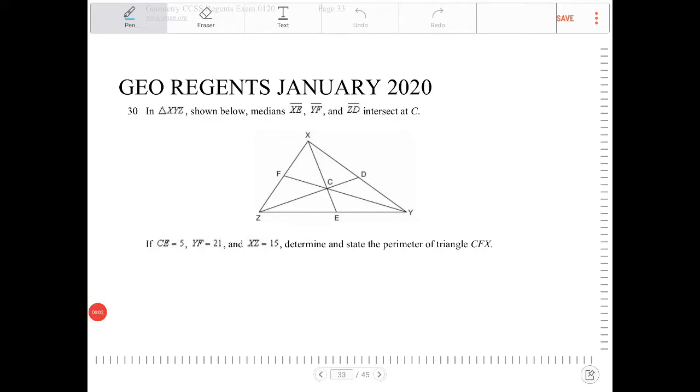In triangle XYZ, shown below, medians XZ, YF, and ZD intersect at C. So when all the medians intersect, the point of intersection is called a centroid, and the centroid has some properties, which I want to explain in a moment.